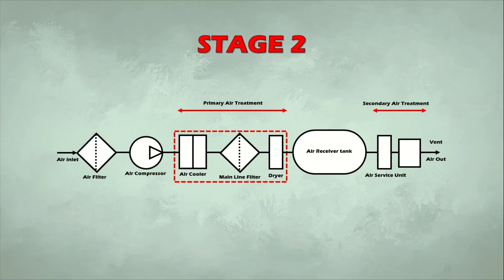The air from the compressor is treated in the second stage. The temperature is lowered using a cooler, and the air is dried using a dryer. An inline filter removes contaminant particles. This treatment is called primary air treatment.